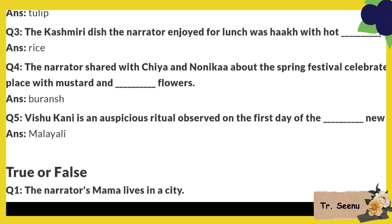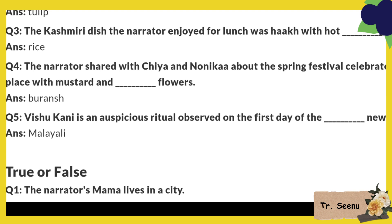The narrator shared with Tia and Nonika about the spring festival celebrated at their place with mustard and dash flowers. So which flower was the mustard? The orange one.